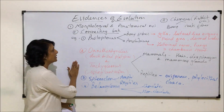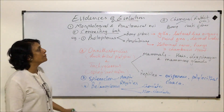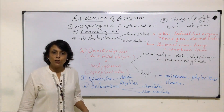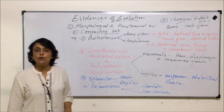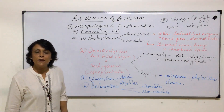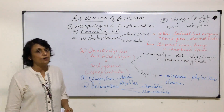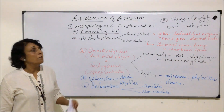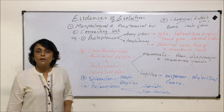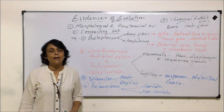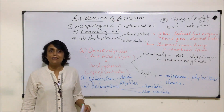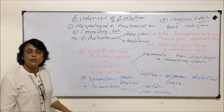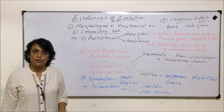In summary, morphological and anatomical evidences include: homologous and analogous organs, vestigial organs, atavism or reversion, and connecting links. All these evidences help us understand how evolution has taken place. The next category to be discussed is embryological evidences.